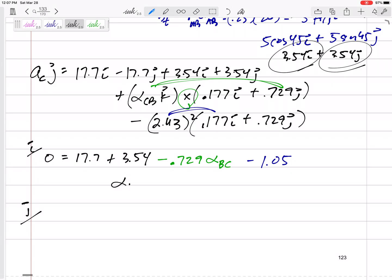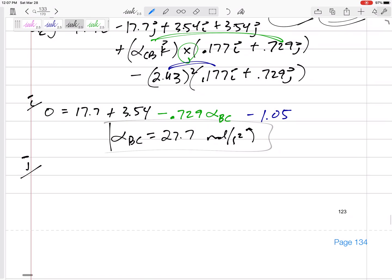And hey, if that one equation has one unknown, go ahead and solve. So, I've got alpha of BC 27.7 radians per second squared. It came out positive, which means I guessed correctly. What did I guess? I guessed positive K. I guessed counterclockwise, and so it was correct.